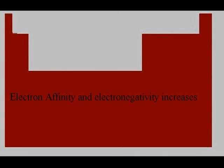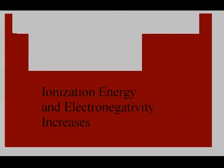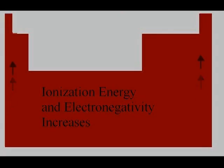As you travel across the periodic table from left to right, electron affinity and electronegativity increase. Also, as you travel up, ionization energy and electronegativity increase.